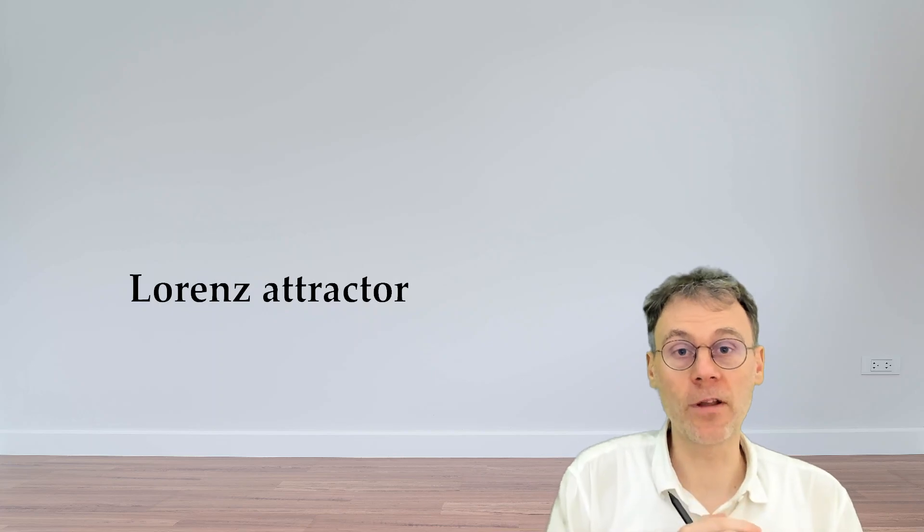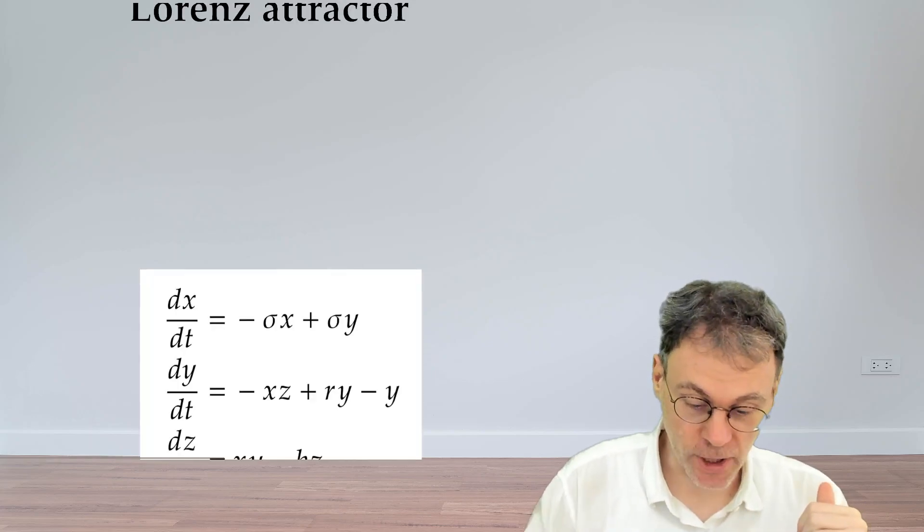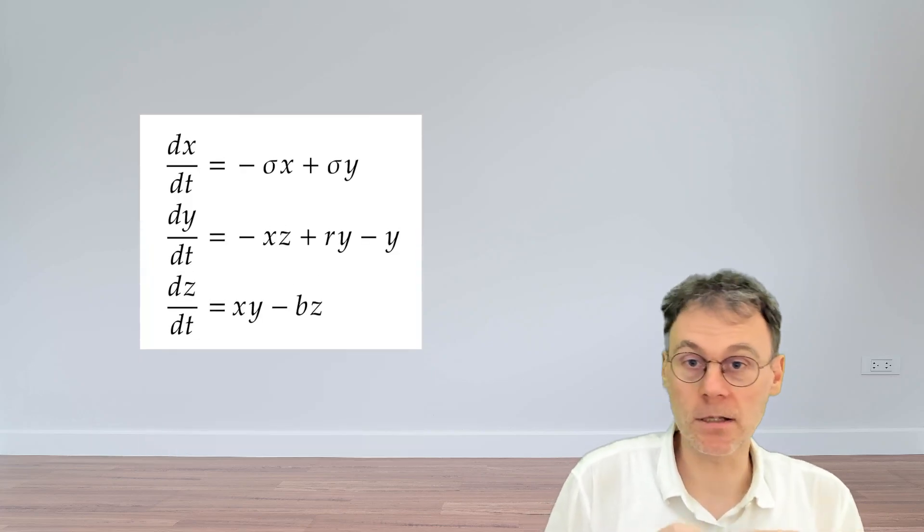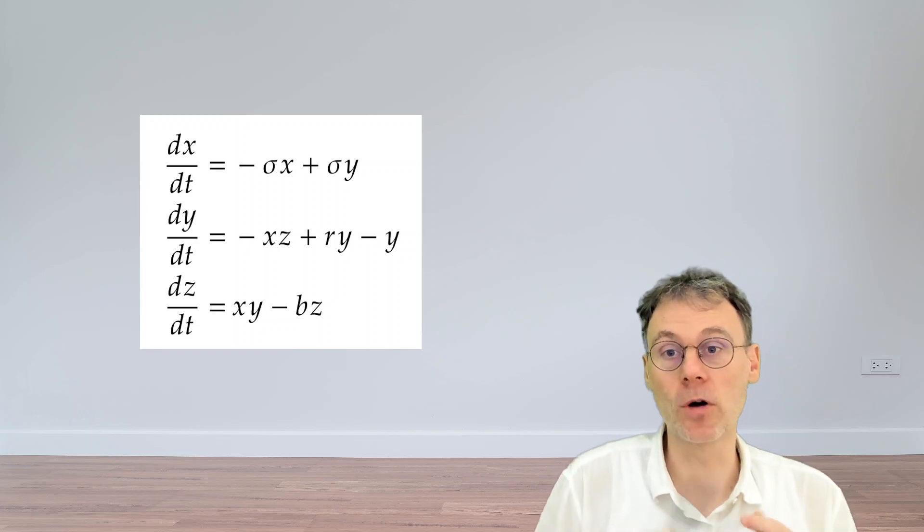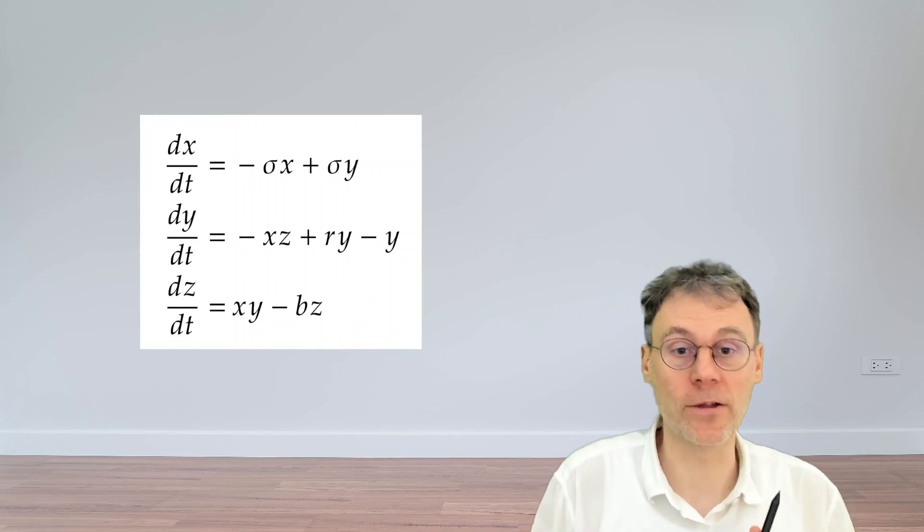Finally, let's talk very briefly about a famous example in the field of continuous dynamics, which is this set of equations here, which is due to Lorenz. He was actually a weather scientist in the 60s, and he wrote down equations like these to study an abstract model of a weather system.